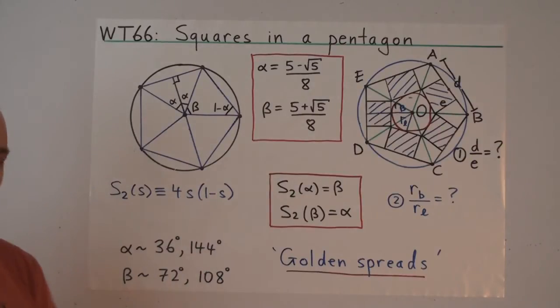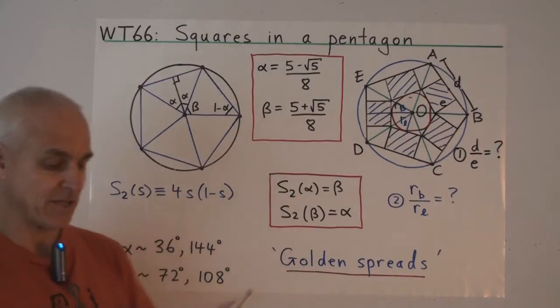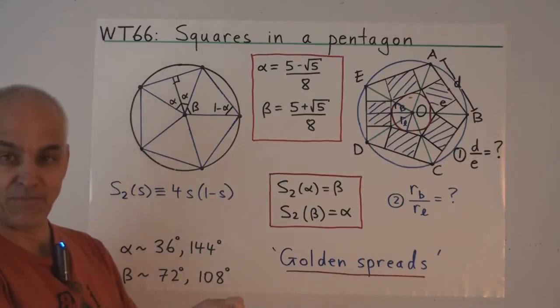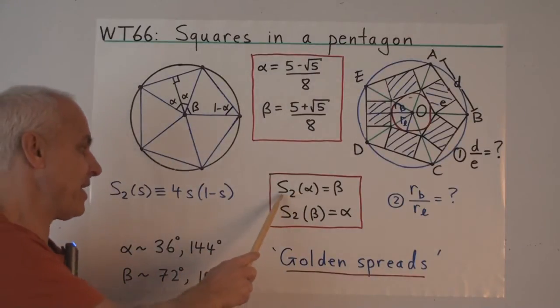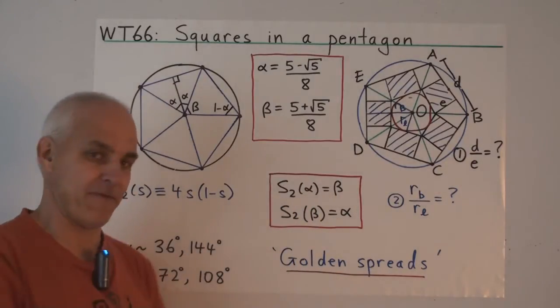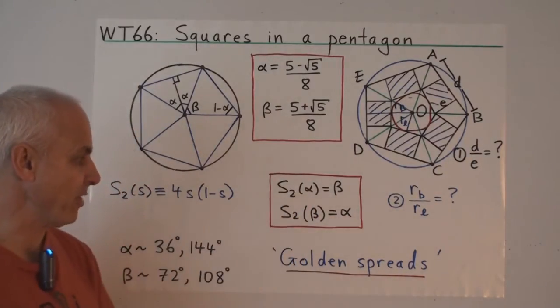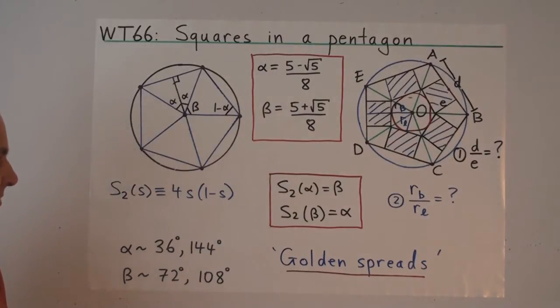This is our second spread polynomial, the logistic map, which tells us what happens to a spread if we double the sector. So we now see that S2 of alpha equals beta and S2 of beta equals alpha. That's a defining property of the two golden spreads. Alpha corresponds to 36 degrees or 144 degrees and beta to 72 degrees or the complement 108 degrees.